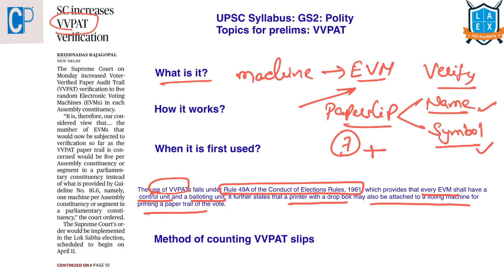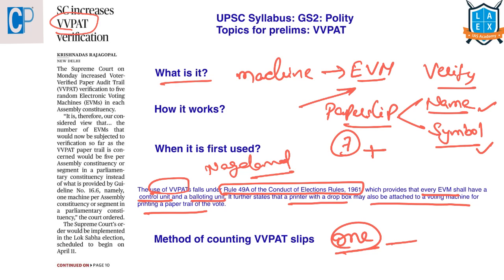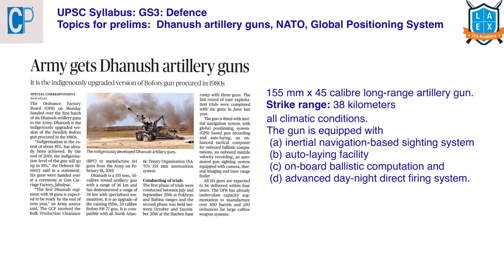These machines were first used in a by-election in Nagaland in 2013. The poll panel currently counts VVPAT slips from one randomly selected polling booth in every assembly constituency for legislative assembly elections, and one polling booth in each assembly segment for parliament elections. Now the Supreme Court has increased this number to five randomly selected EVMs in each assembly constituency.